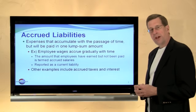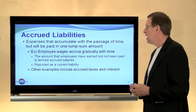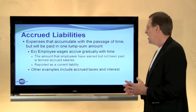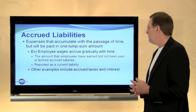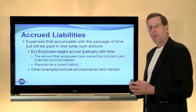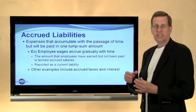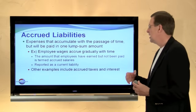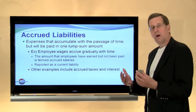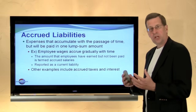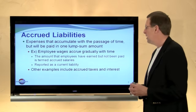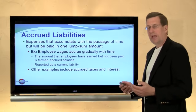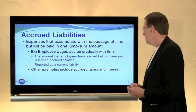Accrued liabilities are another example of current liabilities. These are expenses that accumulate with the passage of time but will be paid in one lump sum amount in the future. An example would be wages that are due to employees — these accrue each day as employees work for us. The amount owed to the employees at any point in time would be shown as accrued wages payable in the current liability section. When paid, the liability would be removed from the books.